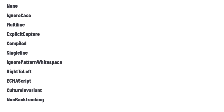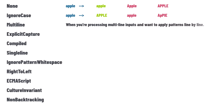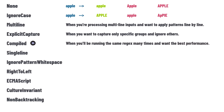None is the basic setting — it finds words exactly as written. Ignore Case makes the search case-insensitive, so 'Apple', 'apple', and 'APPLE' all match. Multiline allows the caret and dollar anchors to match at the beginning and end of every line, not just the whole string. Explicit Capture ensures only explicitly named groups are captured. Compiled acts like a speed boost, making repeated searches faster.